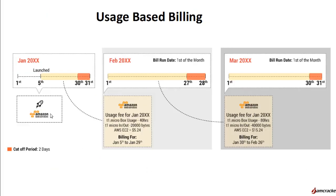Usage-based billing is the billing model where customers are billed automatically based on actual usage or consumption. It is a billing method widely used by businesses like telecom companies, where usage is measured by how many units a customer has actually used. A popular example is the on-demand virtual machines offered by Amazon EC2 services, charged based on usage after consumption.